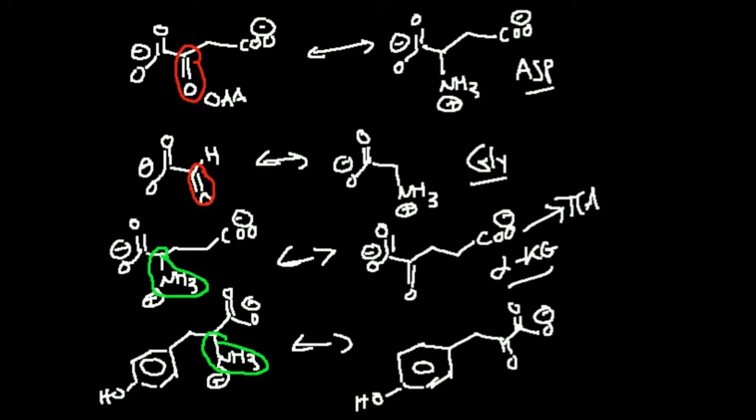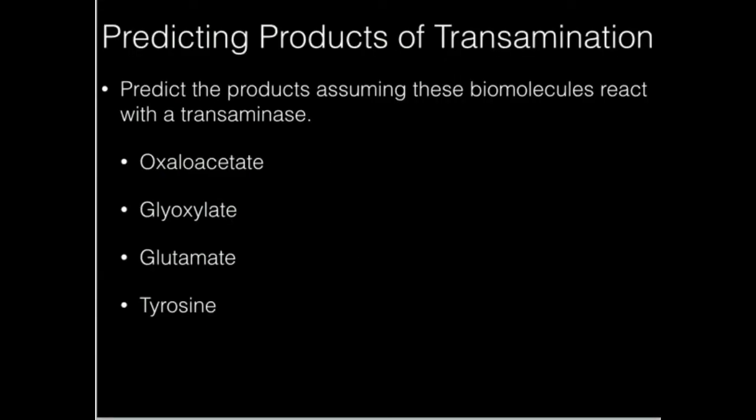Hopefully that exercise helps you understand what a transaminase is doing. It's just taking an amine and replacing it with a carbonyl and vice versa. Make sure to like this video and subscribe. In the next video, we'll go over pyridoxal phosphate and NADPH. Thanks for watching.